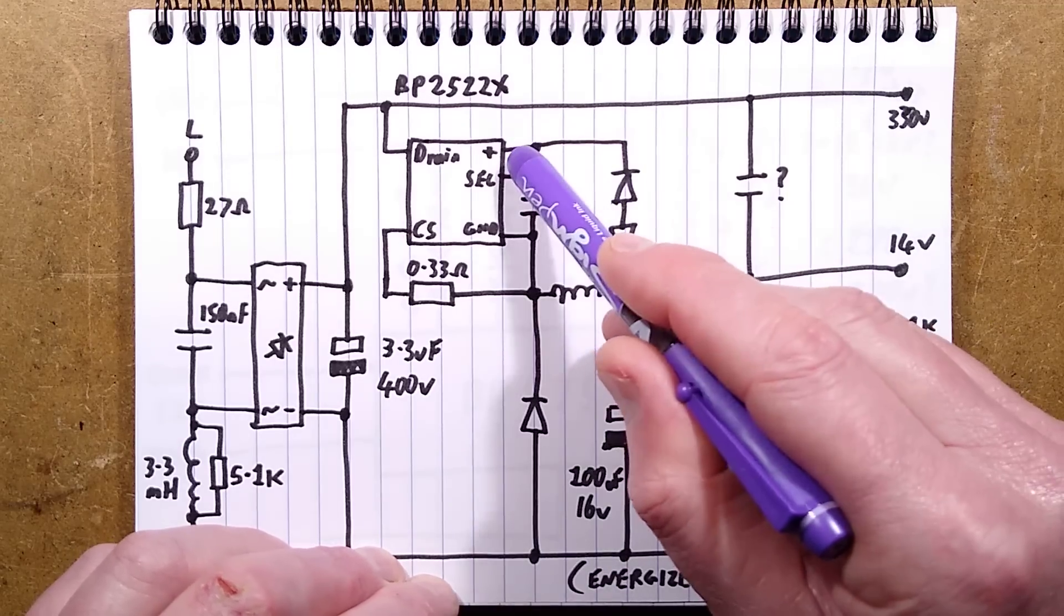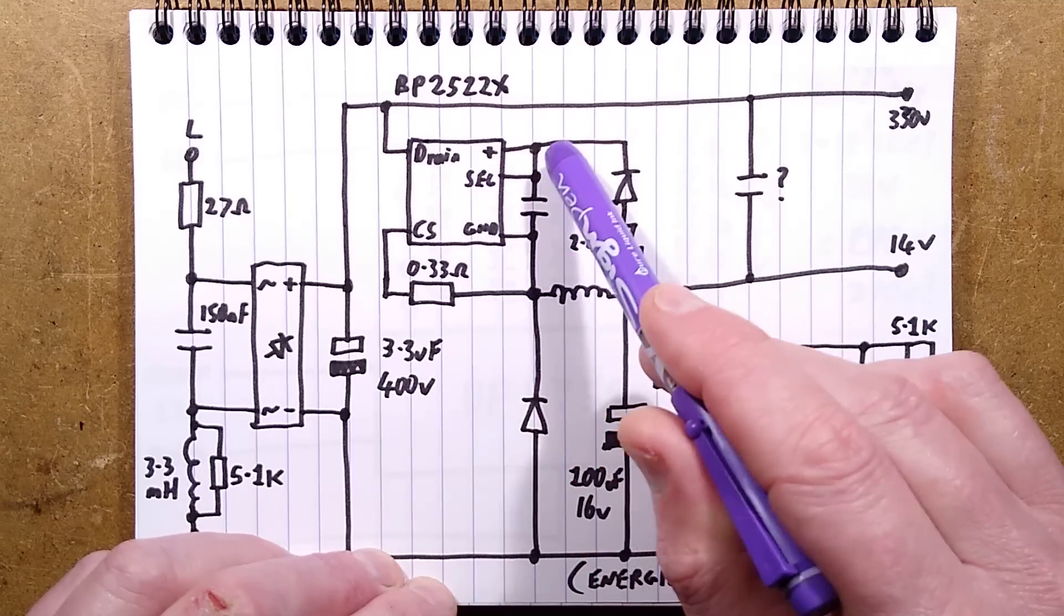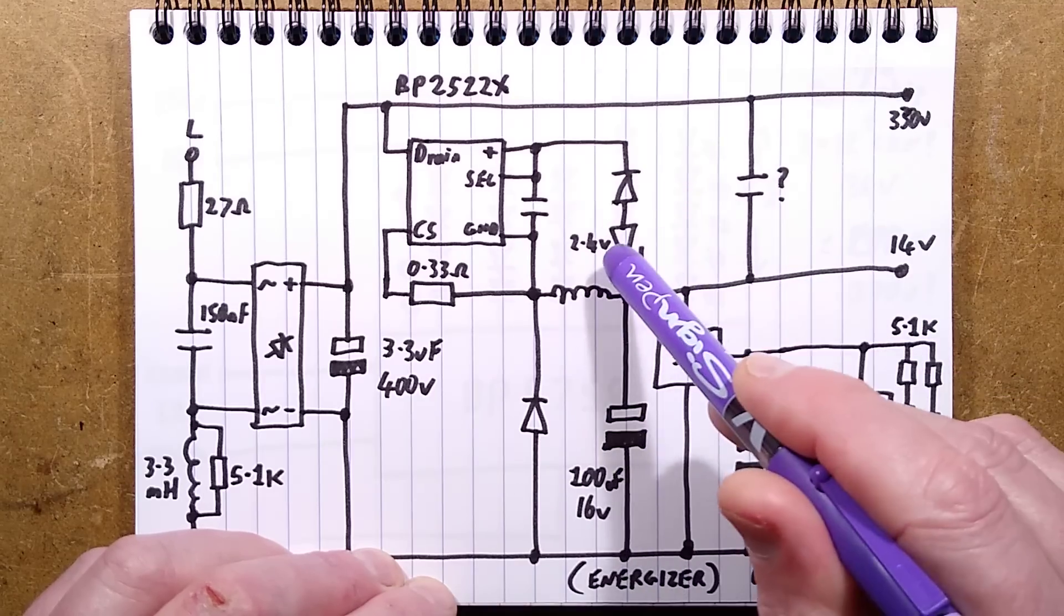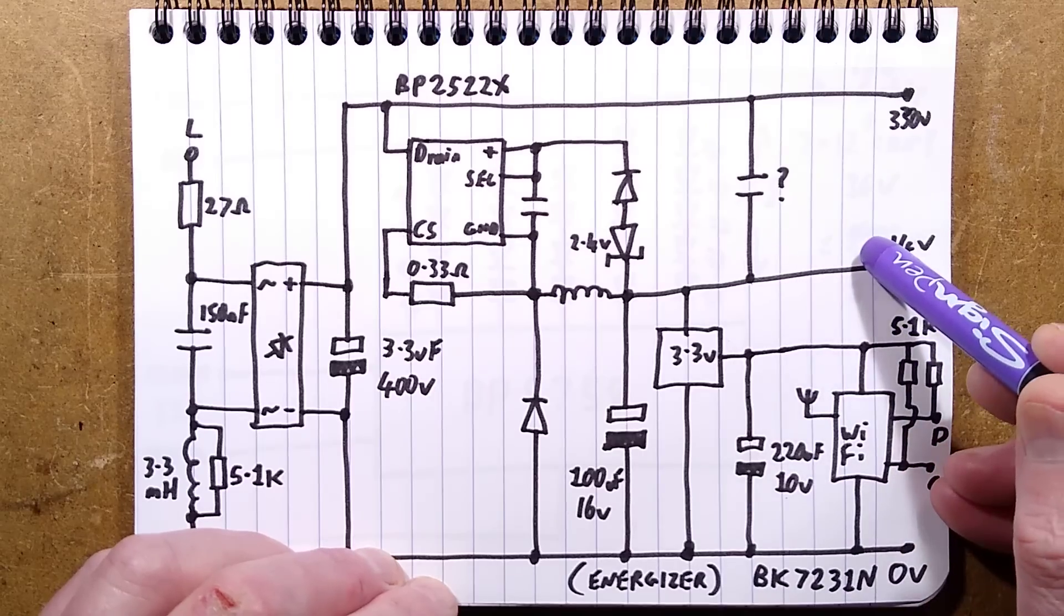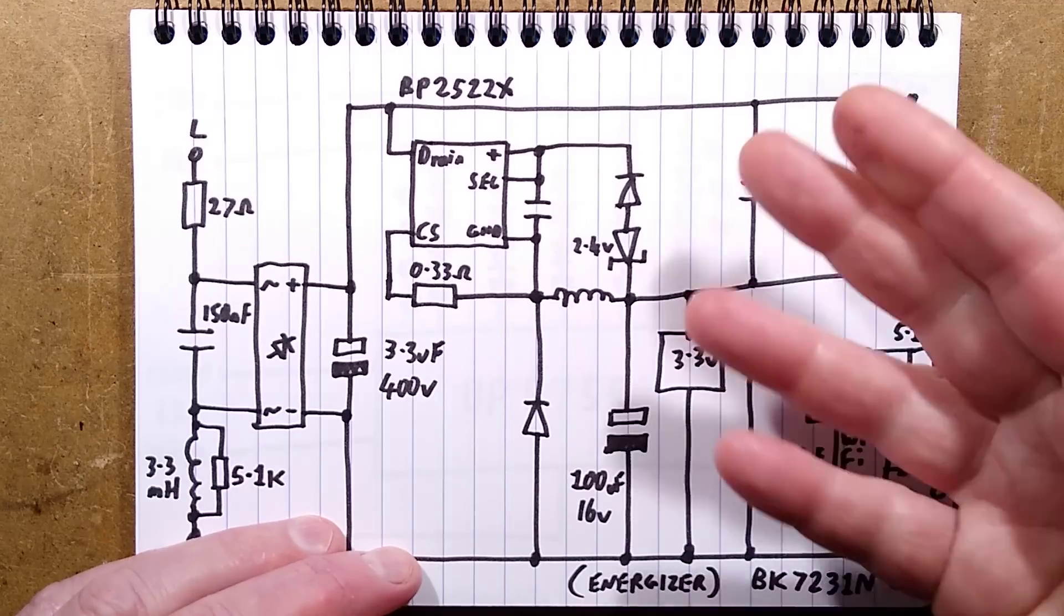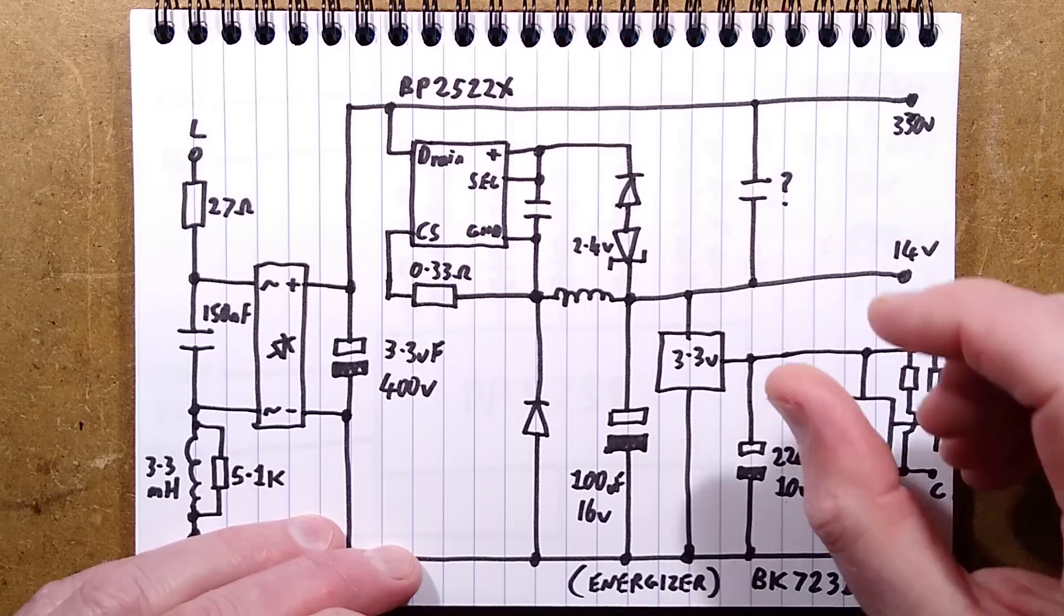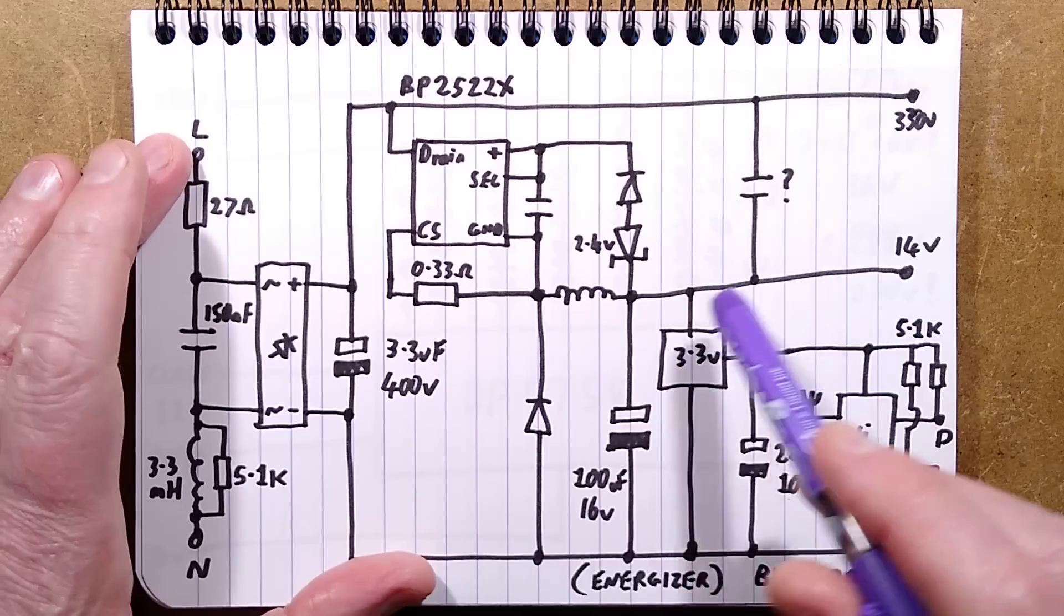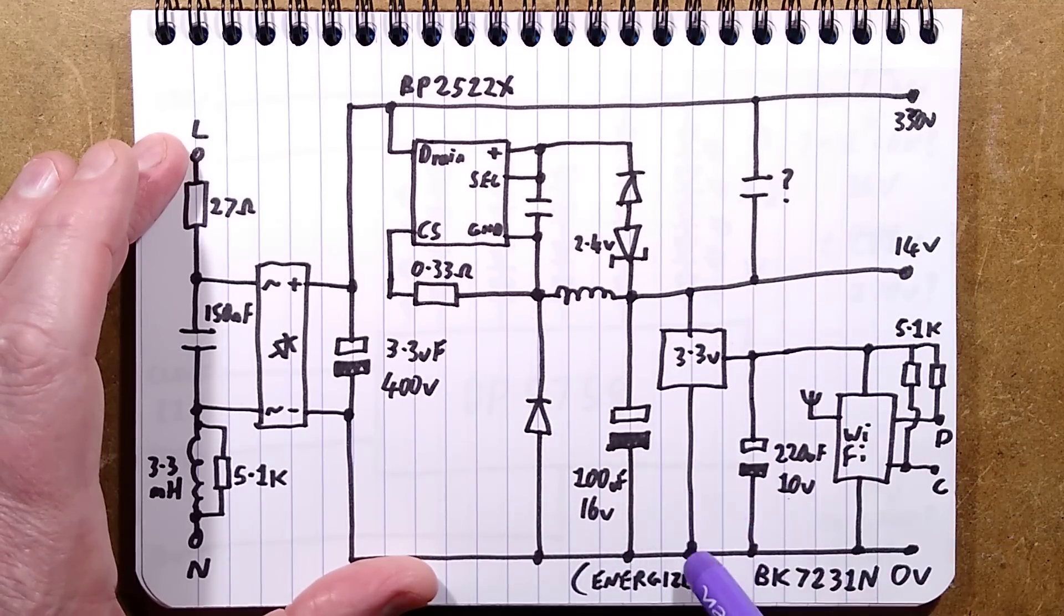There's that extra 2.4 volt zener they've stuck in series with the standard diode. This chip uses its supply voltage to sense the voltage across the capacitor. By adding that zener, they've nudged it to get their 14 volts, which is needed because there are effectively four green and blue LEDs in series on the board. That 14.4 volt supply also feeds the little 3.3 volt all-in-one module.